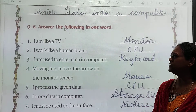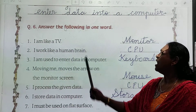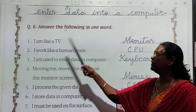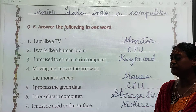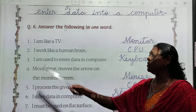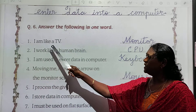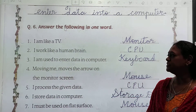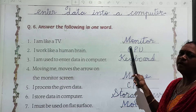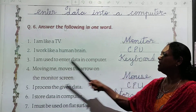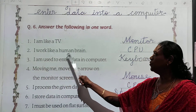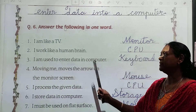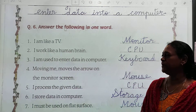Now question number 6: Answer the following in one word, or 'Who am I?' — same meaning. First: I am like a TV. TV ki tarah kaun dikhta hai? Correct — monitor. So the answer is monitor. Second: I work like a human brain. Human brain ki tarah kaun kaam karta hai? C-P-U — CPU.